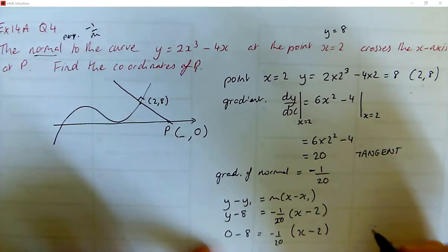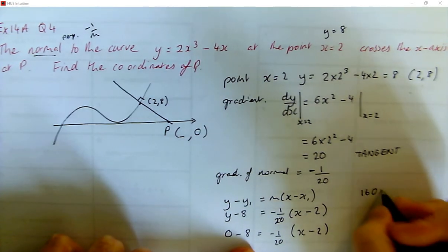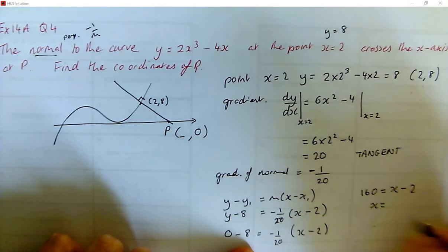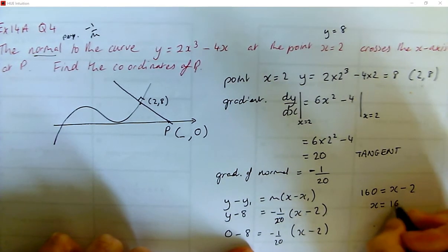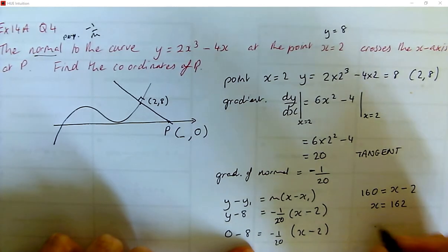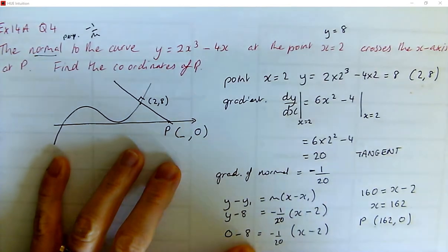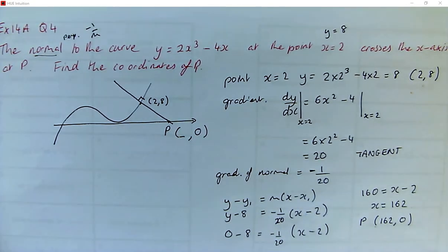So let's multiply both sides by negative 20. So we get 160 is x minus 2. So that means x is going to be, well, 162. So the point P is (162, 0). I hope I've got that right.